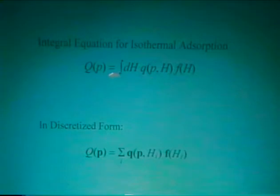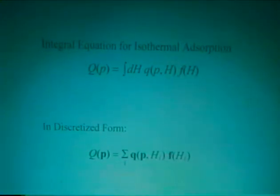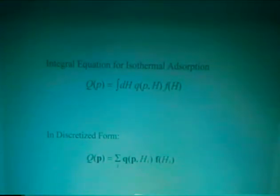Basically, we can express the problem this way for isothermal adsorption. There are a lot of assumptions in using this equation, of course, that the pores are not interconnected and so on. But taking an adsorbed phase value, we simply say that the observed isotherm Q of P is the integral over all pore sizes of some kernel function, which describes adsorption in a given size pore, with a pore size distribution that we would like to know. Since really we're only interested in the numerics of this, we usually approach this problem in a discretized form as a summation rather than try to find a functional fit for the elements.